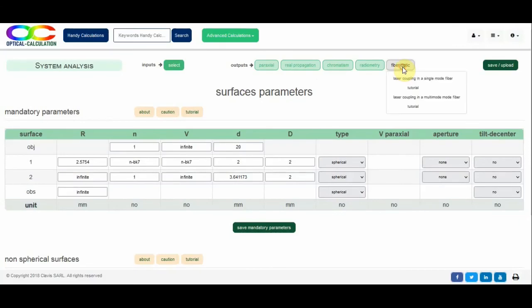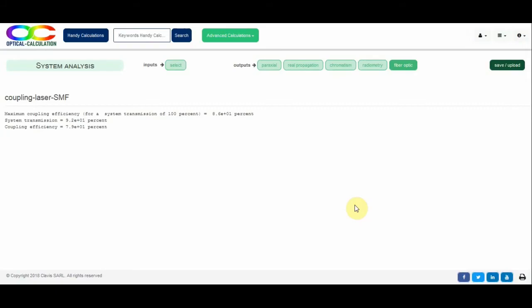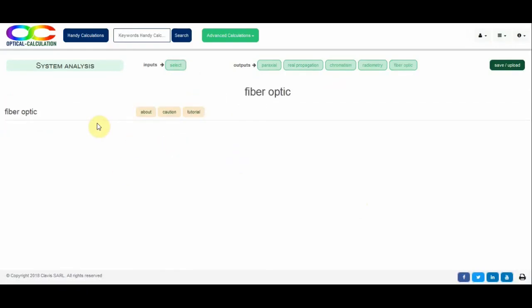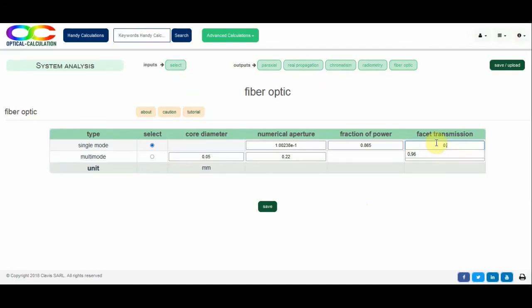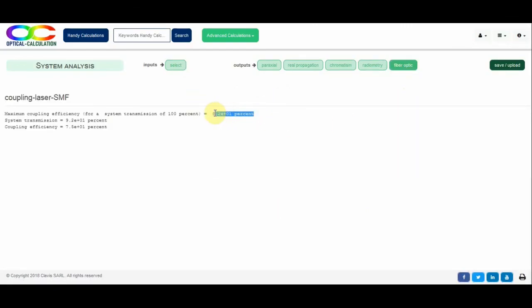Once the parameters are entered, I just have to click on the laser coupling in a single mode fiber calculation. You can see that the coupling ratio is 86% if we are not considering the system transmission and if the Fresnel reflections at the fiber entrance are null. We can see that it is not 100% as for a perfect lens. If we introduce Fresnel reflections, which are in general equal to 4% for a silica fiber, the coupling efficiency goes down now to 82%. If the system transmission with uncoated surfaces is considered, it finally drops to 75%.